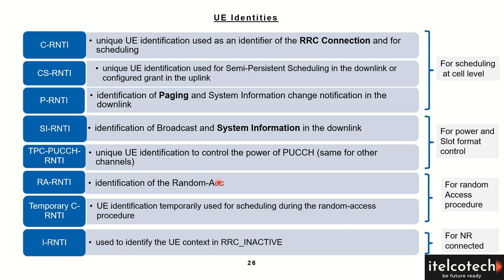During the random access, there is a different identity which starts with RA. For identification of the UE which is temporarily given to it during a random access procedure, that will be taken care of by Temporary C-RNTI.